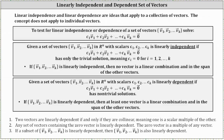To test for linear independence and dependence of a set of vectors v sub 1 through v sub k, we solve the homogeneous vector equation where we have the linear combinations of vectors v sub 1 through v sub k equals the zero vector. If the vector equation only has a trivial solution, meaning c sub 1 through c sub k are all zero, then the set of vectors is linearly independent, which also means no vector is a linear combination in the span of the other vectors.